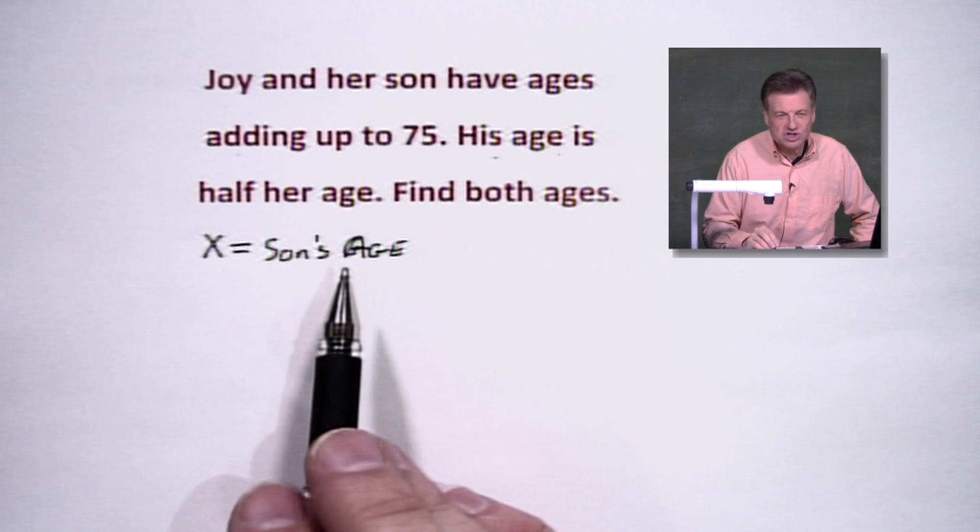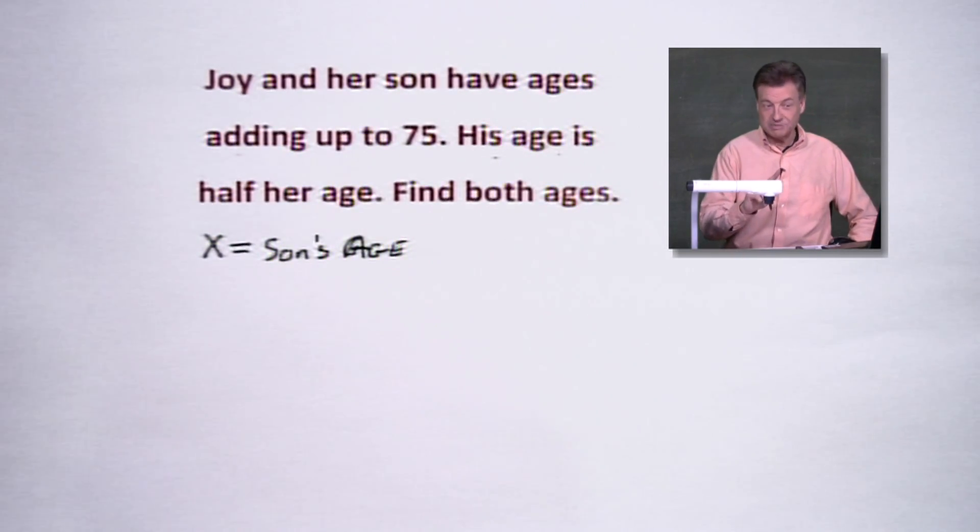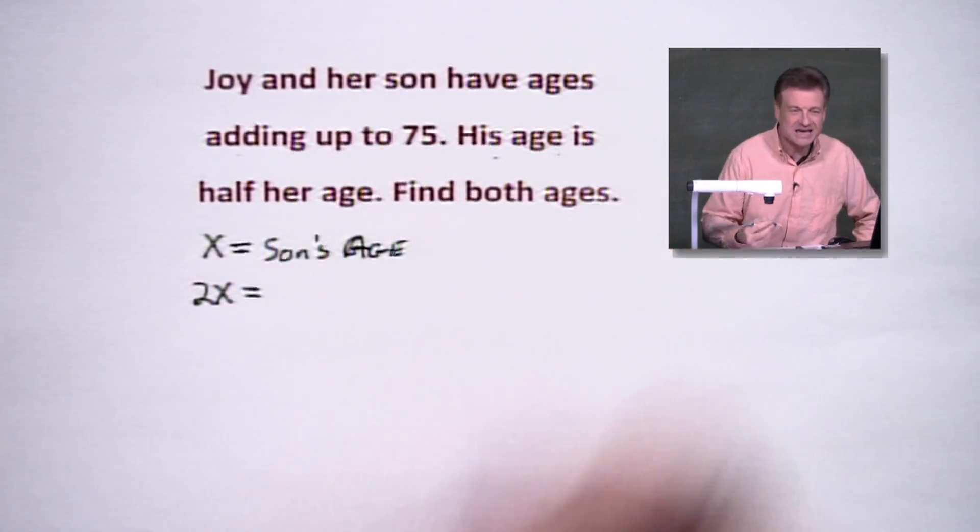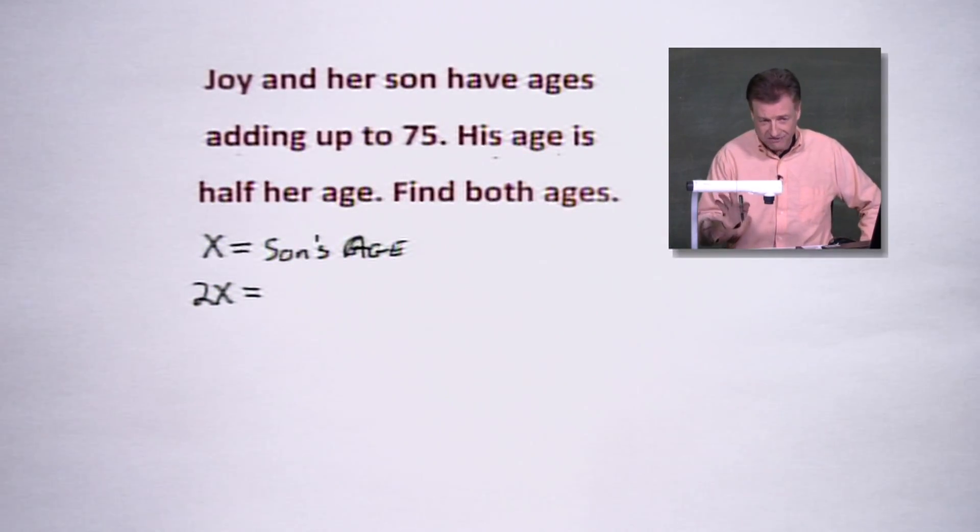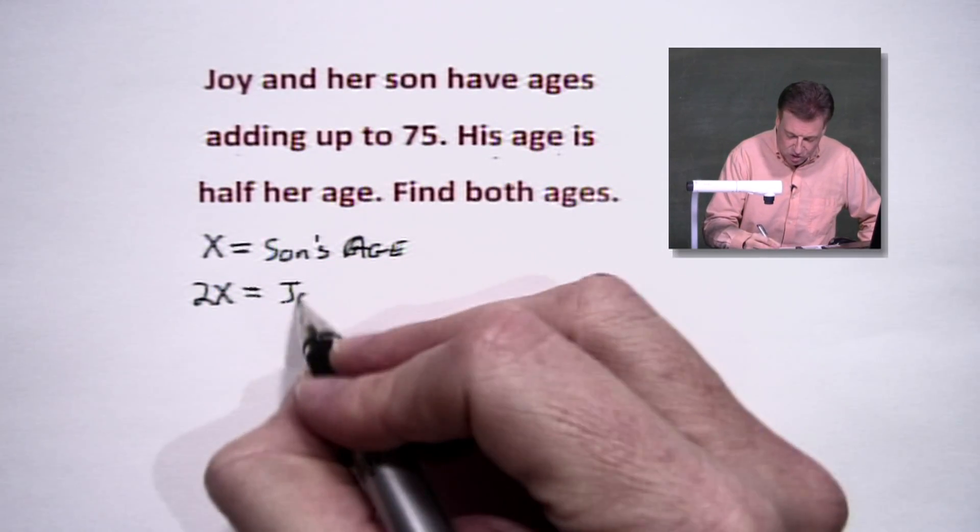Because what happens if her son's age is half her age, then her age, this would be Joy, should be twice his. So I'm going to use 2X, which I think most of us like to see better than fractions. Although we can do it with a fraction, we'd be switching options here. But let's go ahead and let this be Joy's age.